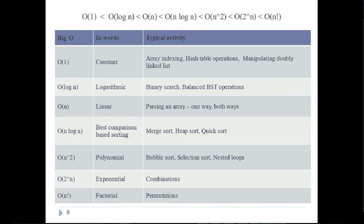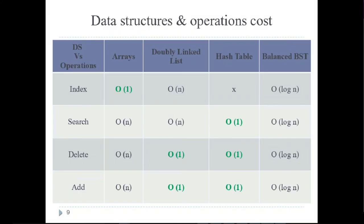To recap: binary search and balanced BST search are logarithmic. Parsing an array one way or both ways is linear. Insertion sort, selection sort, and bubble sort are polynomial — n squared in the worst case. Other nested loops are also polynomial. Combinations are exponential, and permutations are factorial. This is a summary of operations and the complexities they map to.